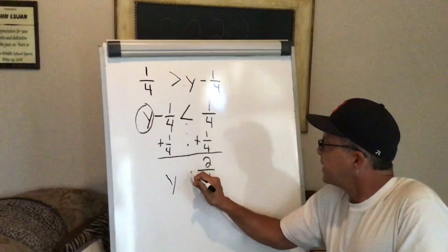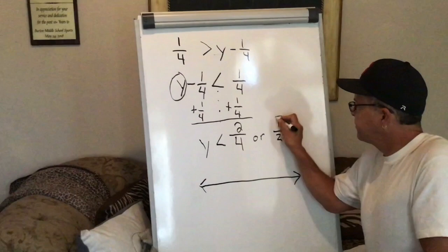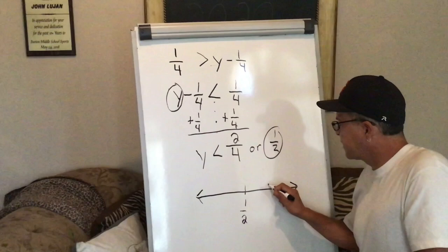So y is less than two-fourths or one-half. Now if I'm going to graph this on a number line, I need to put right in the middle, a half.